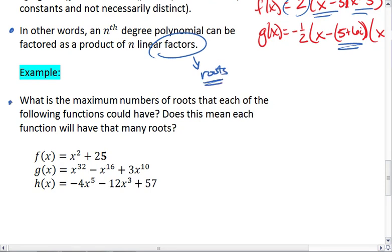We want to know what is the maximum number of roots that each of the following functions could have. Does this mean that each function will have that many roots? For f of x, we have f of x equals x squared plus 25. Degree f is 2, so I can have up to 2 roots.